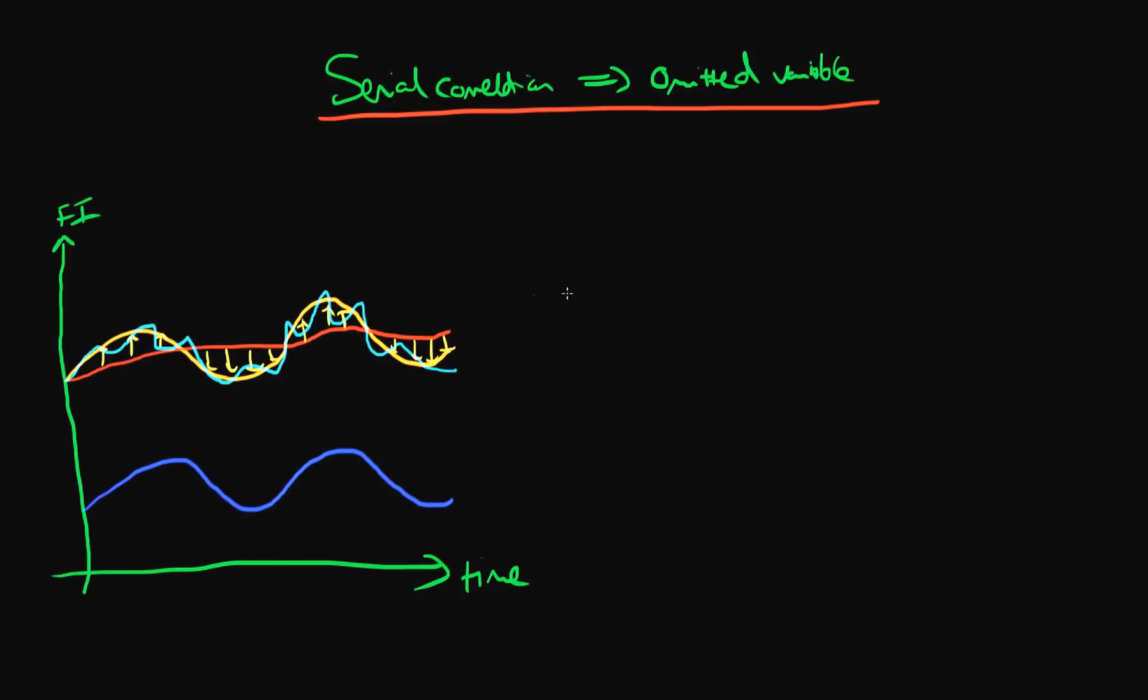So this is an example whereby I've misspecified my model. I've left out an important variable which is in this case rain, and by leaving out that important variable that has led me to have serial correlation in my errors but it's also symptomatic of the fact that I'm probably going to have omitted variable bias.